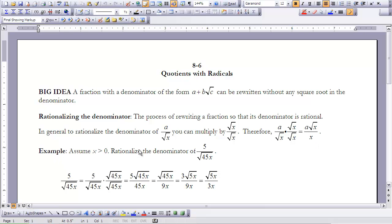So let's take a look at the value of 5 over the square root of 45x. So we can do that by saying 5 over the square root of 45x is the same as 5 over the square root of 45x times the square root of 45x over the square root of 45x. We can multiply that out and we get 5 times the square root of 45x over 45x.